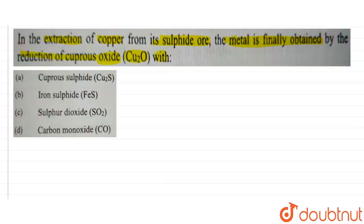So first of all, if we see here, we know that there is a process which is known as Bessemerization. So in this process, we can say that what happens is we get a molten mat.